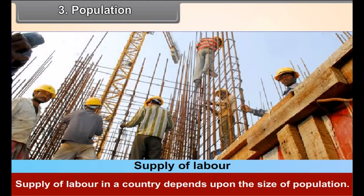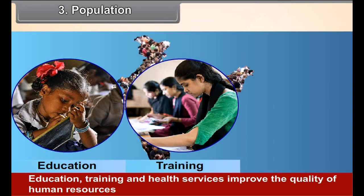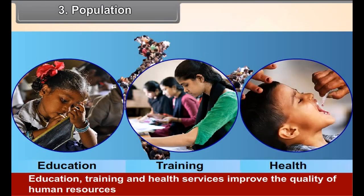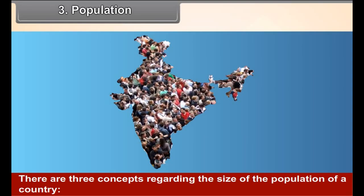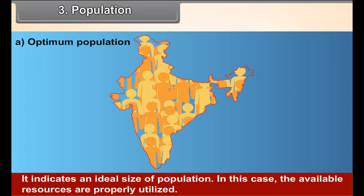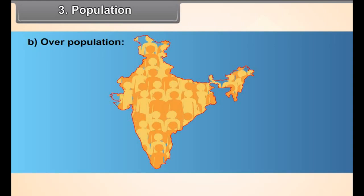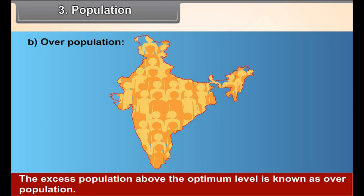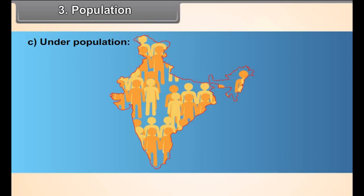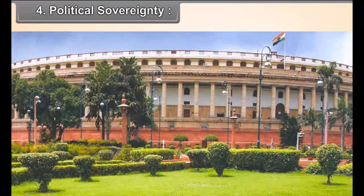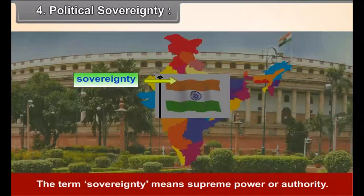Population. Supply of labor in a country depends upon the size of population. Education, training and health services improve the quality of human resources. There are three concepts regarding the size of population of a country: Optimum population indicates an ideal size of population where the available resources are properly utilized. Overpopulation is the excess population above the optimum level, which increases pressure on the available resources. Underpopulation is a situation in which the existing population is not enough to use the available resources fully.